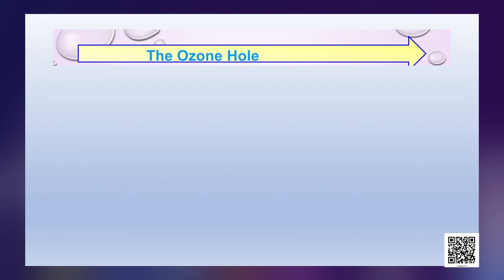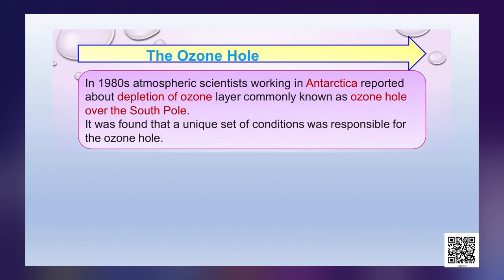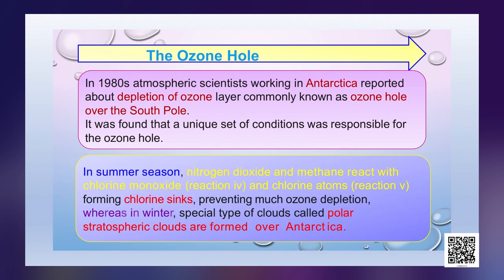The ozone hole is a very familiar term. In the 1980s, atmospheric scientists working in Antarctica reported depletion of the ozone layer, commonly known as the ozone hole, over the south pole. A unique set of conditions was found to be responsible. In summer, nitrogen dioxide and methane react with chlorine monoxide and chlorine atoms, forming chlorine sinks which prevent much ozone depletion.